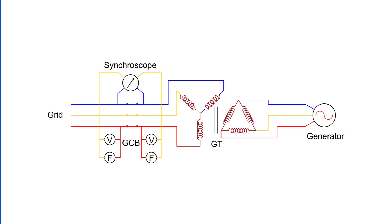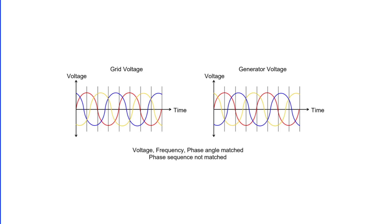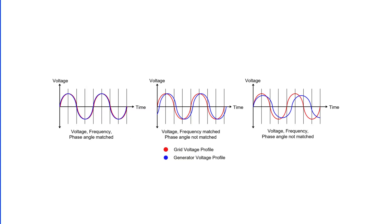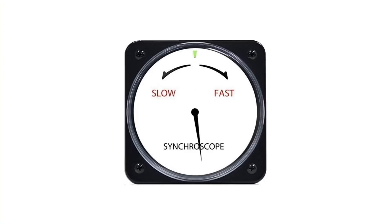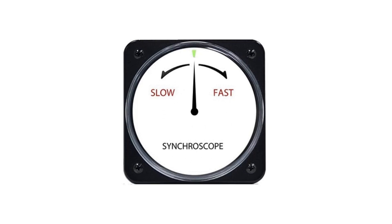Another common cause of reverse power flow is improper synchronization during the connection of the generator to the grid. Synchronization is a delicate process that requires aligning the generator's voltage, frequency, and phase with those of the grid. The synchroscope, a key tool in this process, indicates the relative frequency and phase difference between the generator and the grid. The standard practice is to close the circuit breaker when the synchroscope needle moves clockwise and reaches the 12 o'clock position, ensuring that the generator frequency is slightly higher than the grid frequency, allowing it to take up load seamlessly.